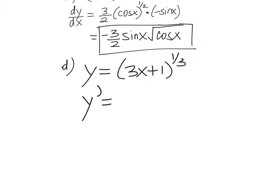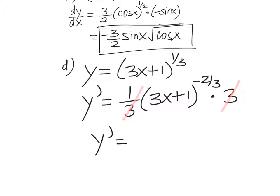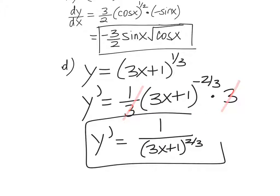Y prime or dy dx, whatever you prefer. Bring the one third down to the front. Don't forget this very important, keep the inside alone. Subtract one from one third, or one third minus one is negative two thirds. And then times three. The derivative of the inside function. Now, the cool thing about this is that your one third and your three will cancel out. And then you get y prime equals one over 3x plus one to the two thirds. You really want to move it down so that it becomes positive. Sorry, Gregorios. I didn't mean to call you Geo. There you go.